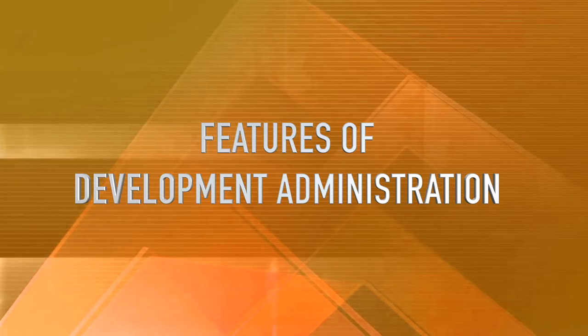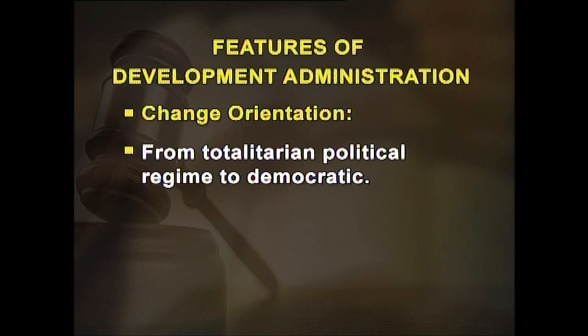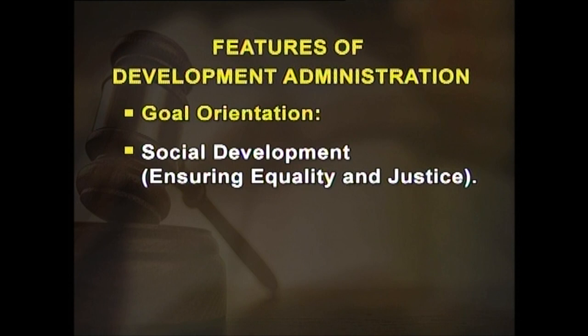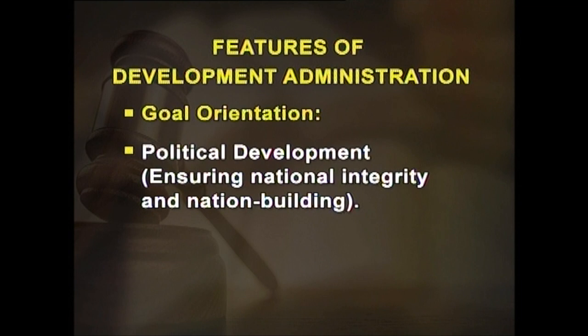The features of development administration include: Number one, change orientation — from a stratified to an egalitarian society, from an agrarian economy to an industrial one, from a totalitarian political regime to a democratic one, and from particularism to universalism. Number two, goal orientation — social development ensuring equality and justice, economic development ensuring growth in production and consumption, and political development ensuring national integrity and nation building.